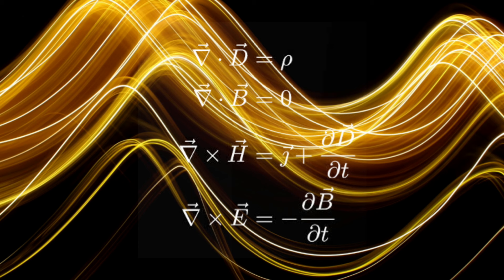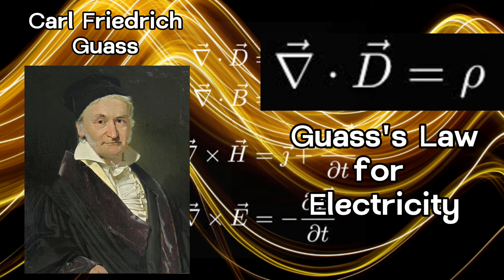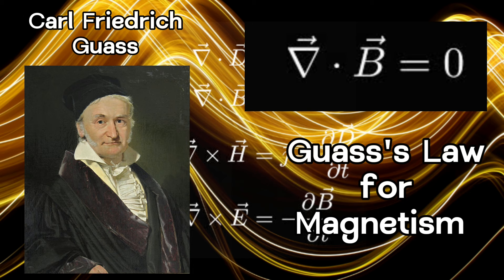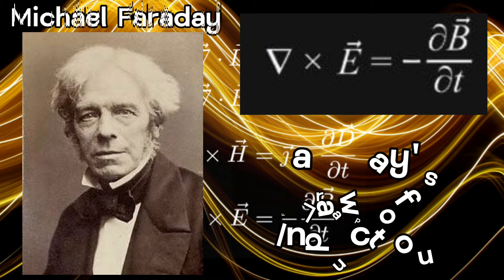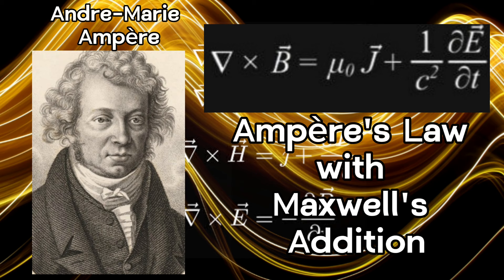The four main equations are as follows. Gauss's law for electricity describes how electric charges create electric fields. Gauss's law for magnetism describes that there are no magnetic monopoles and how magnetic fields circulate around currents. Faraday's law of electromagnetic induction explains how changing magnetic fields induce electric currents. Ampere's law with Maxwell's addition describes the relationship between magnetic fields and electric currents, including the effects of displacement currents.